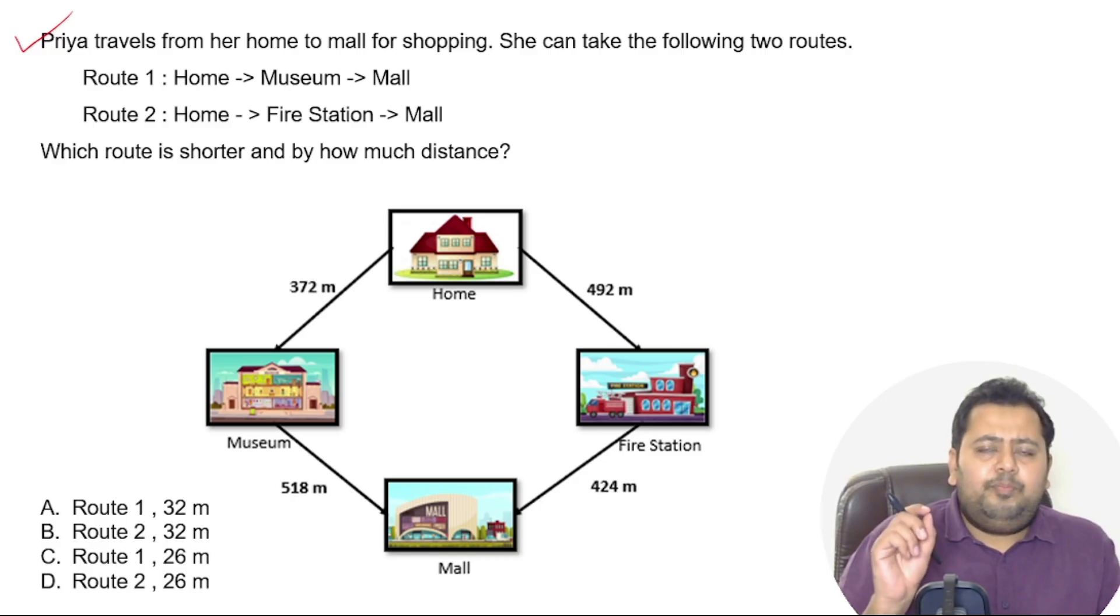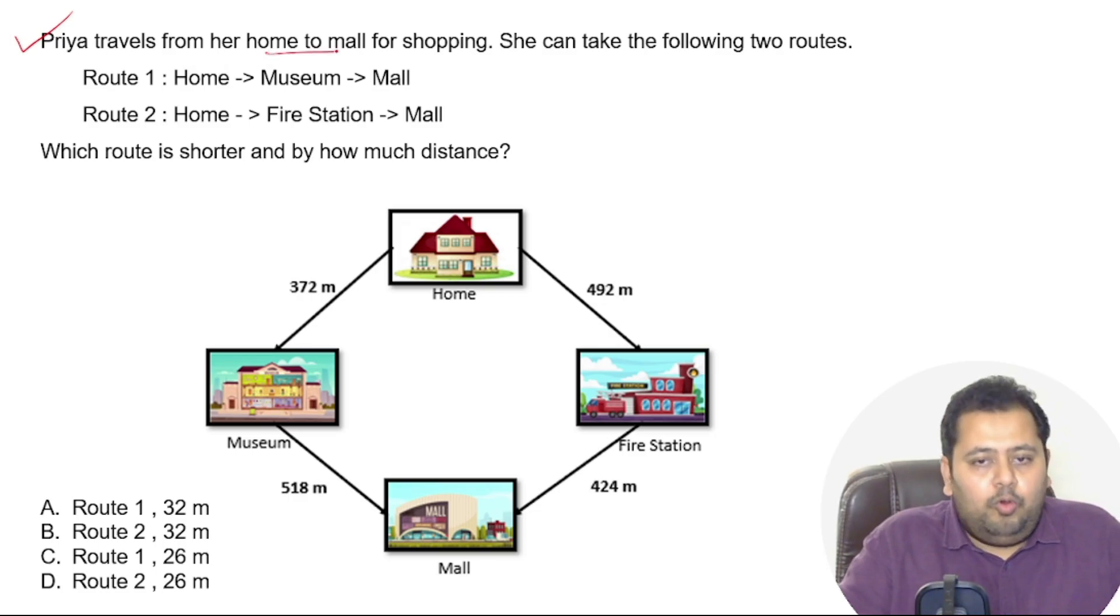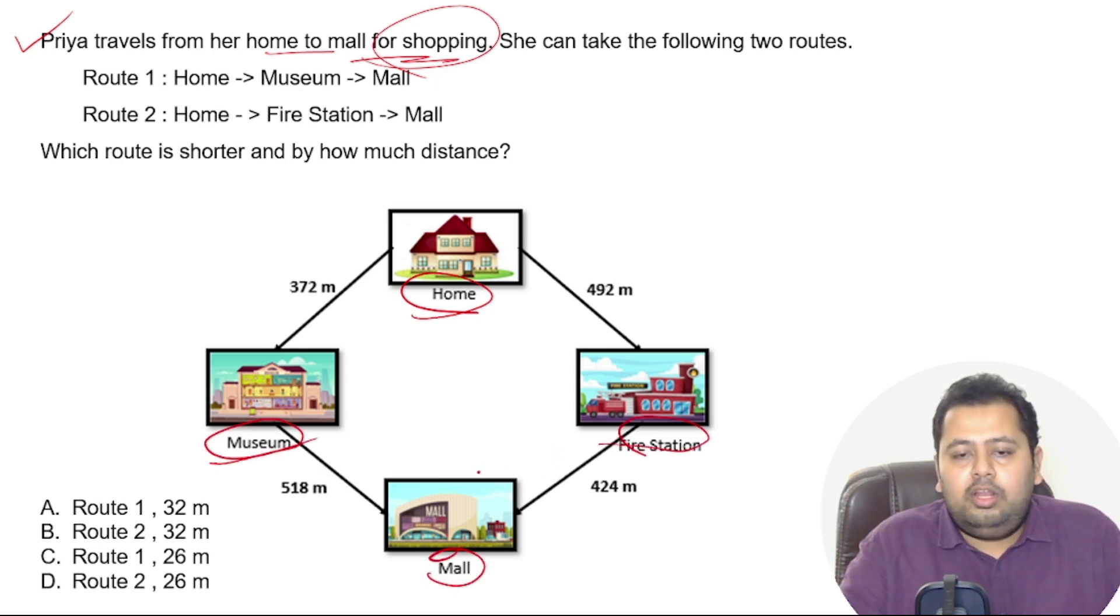For these kinds of questions, practice is really important, else you will spend a lot of time reading, comprehending, and then answering the problem. Priya travels from her home to mall for shopping. She can take following two routes. Route one is from home to museum to mall. Route two is home to fire station to mall.